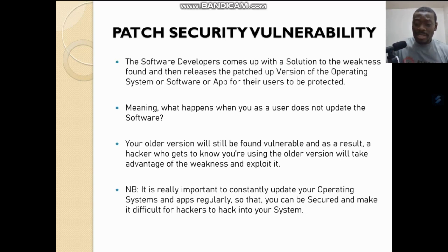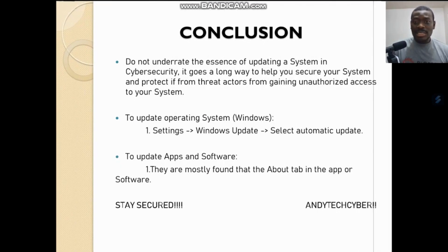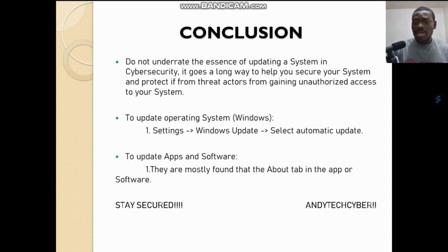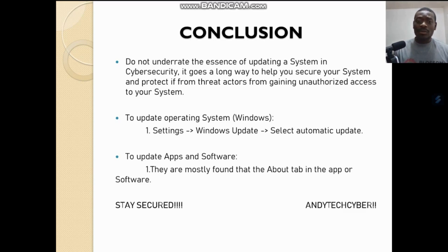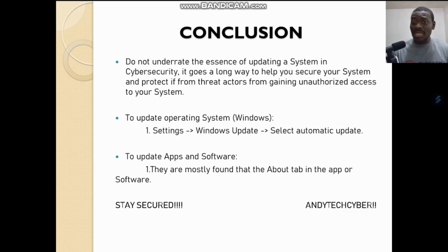Someone might ask: how do I update my operating system? For example, to update on Windows, go to Settings, then go to Windows Update. You can select automatic updates so that anytime there is a newer version of your operating system, it will be updated automatically. You can also do it manually — just be conscious and make sure you update it yourself day in day out.